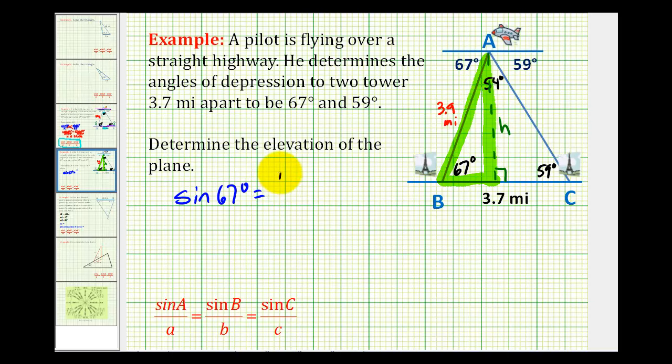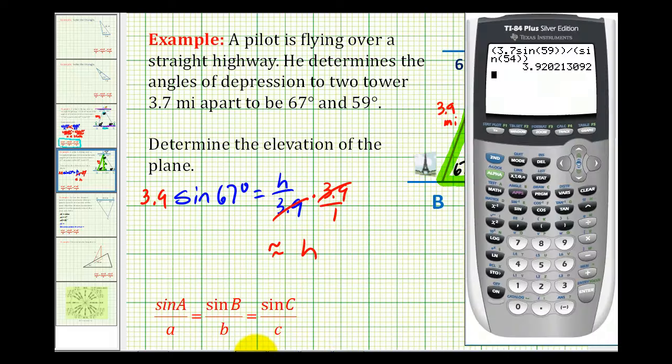And now we can just multiply both sides of the equation by 3.9 to solve for H. That simplifies out. So H is equal to this product here, so we'll get a decimal approximation of 3.9 times the sine of 67 degrees, so the altitude or the height of that plane is approximately 3.6 miles.